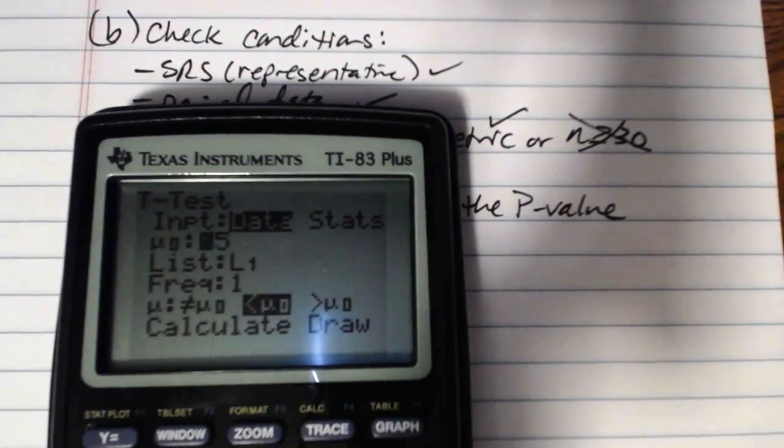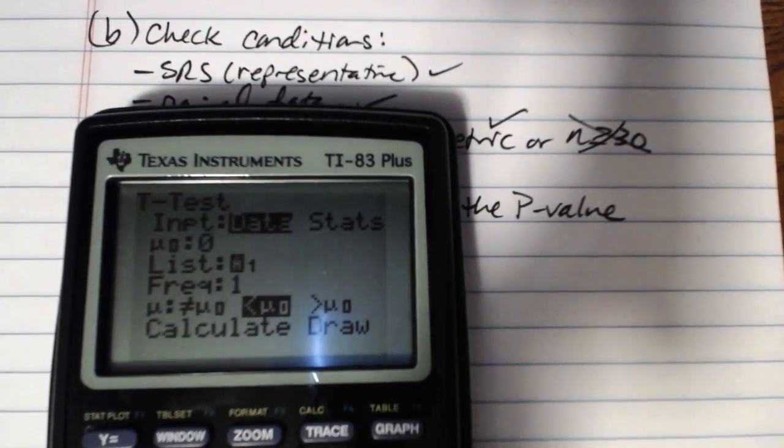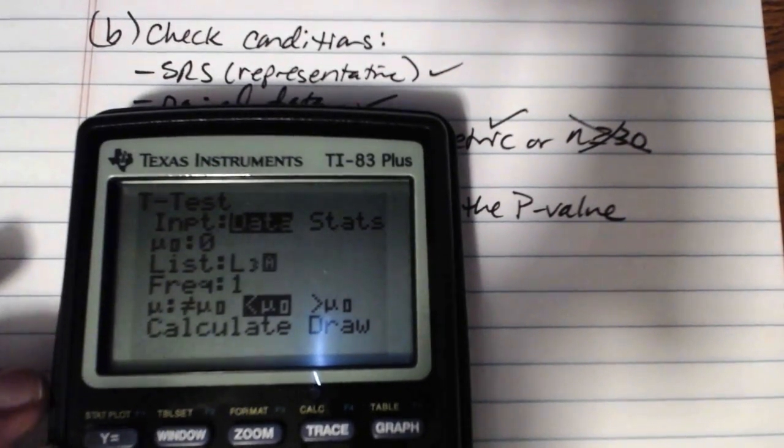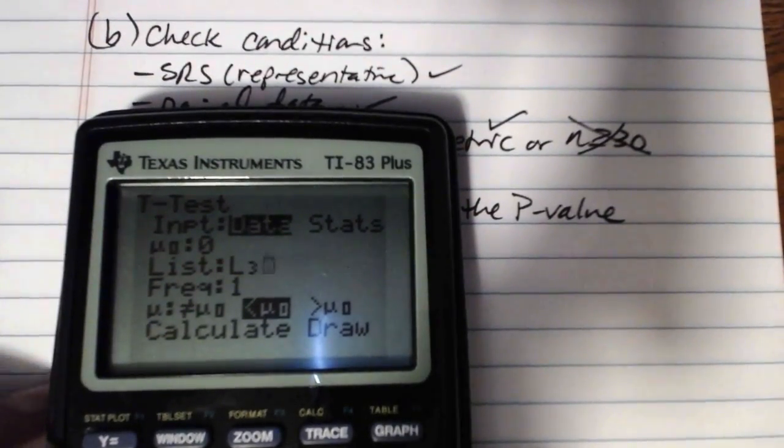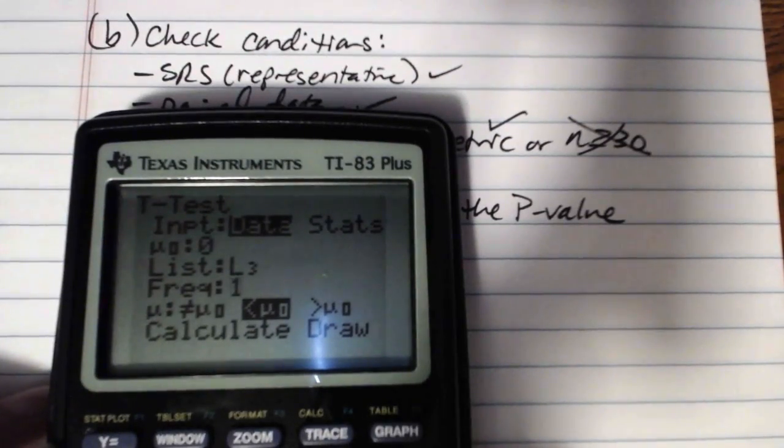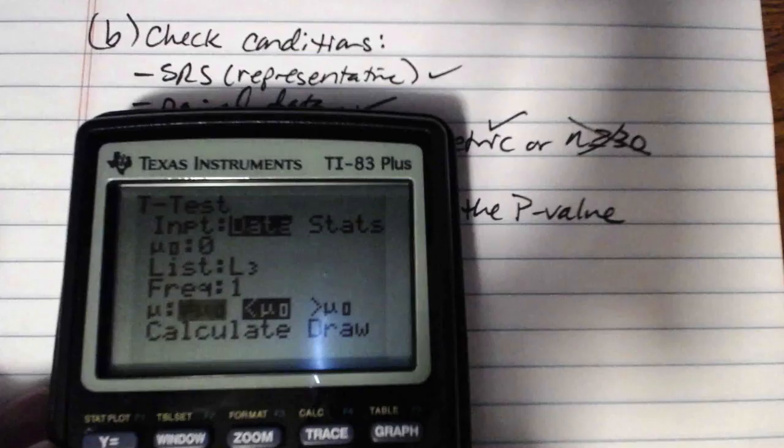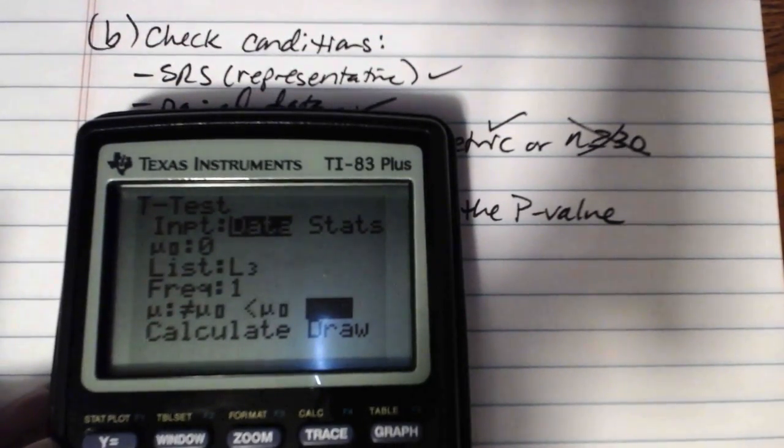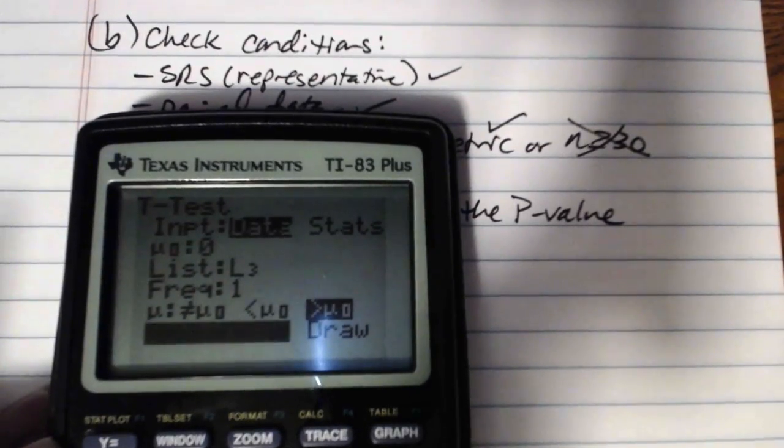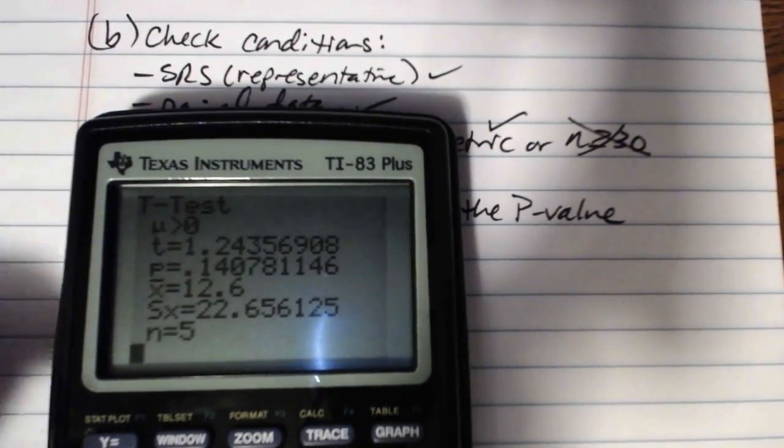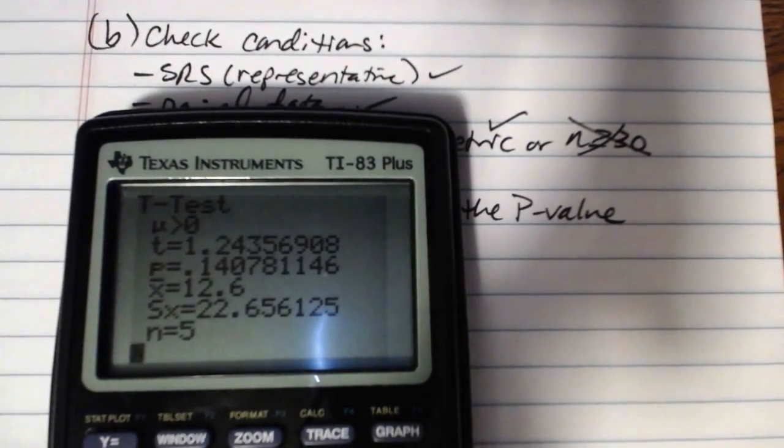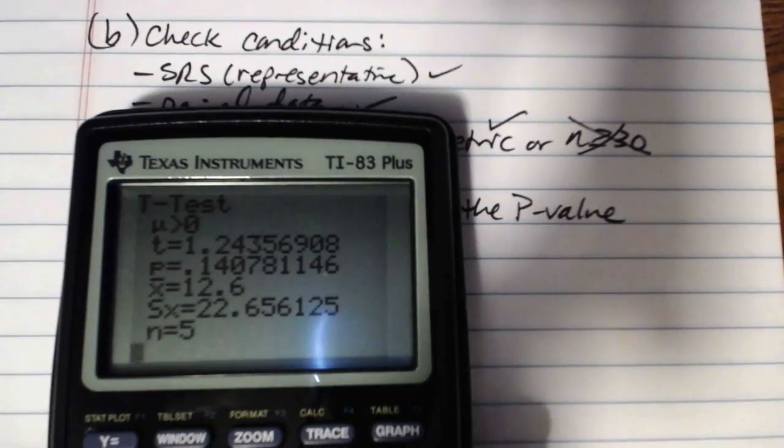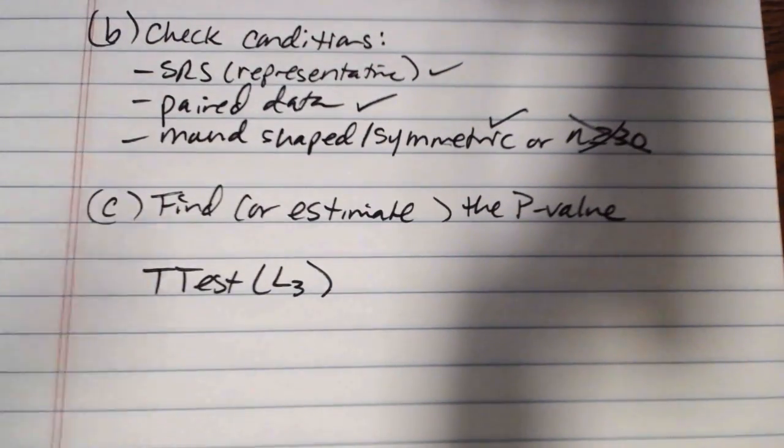Our mean sub-zero, our mu sub-zero from the null hypothesis was zero. We're starting by assuming that the mean difference is zero. And then we want to run the t-test on L3. We are testing that list of differences. So, we want to change the list to L3. Frequency should be set to one. And our alternate hypothesis here had a greater than symbol. So, we would want to select that. And then calculate. And so, here's our p-value, 0.1408, if we round to four places.